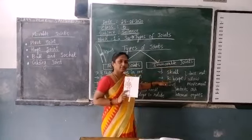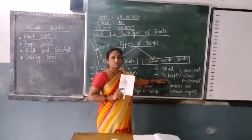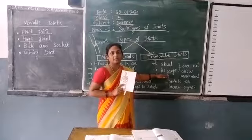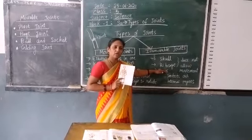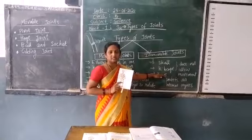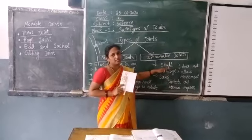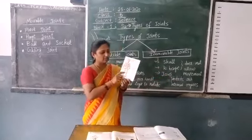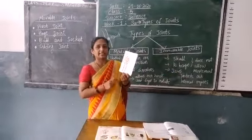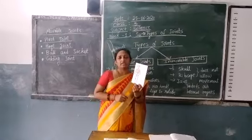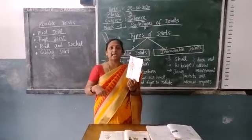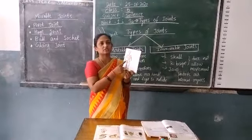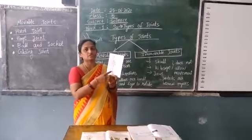So the ribcage and skull are examples of immovable joints. Immovable joints will not allow the movement of our body parts. But how are they useful? The ribcage is helping to protect our internal organs. Now come to the hips region. It will allow our legs to move in different directions and also helps to protect our legs. So the hip joints are helping our legs to move.